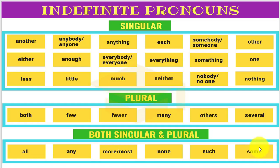Similarly, 'some' can be both singular and plural. 'Some are born great' — plural use. And 'Some knows the right way to success' — singular use. So 'some' is treated both as a singular pronoun and as a plural pronoun.